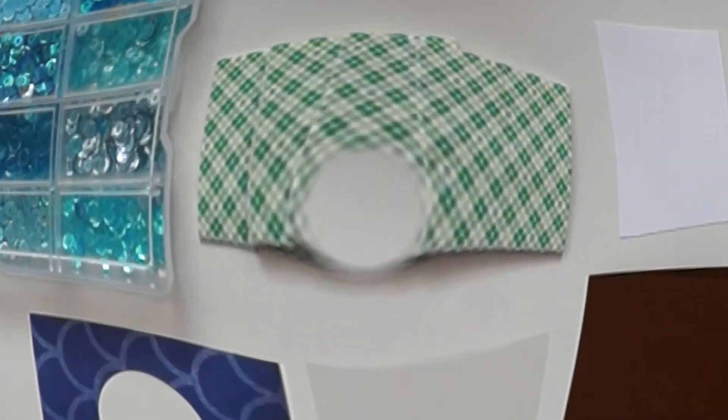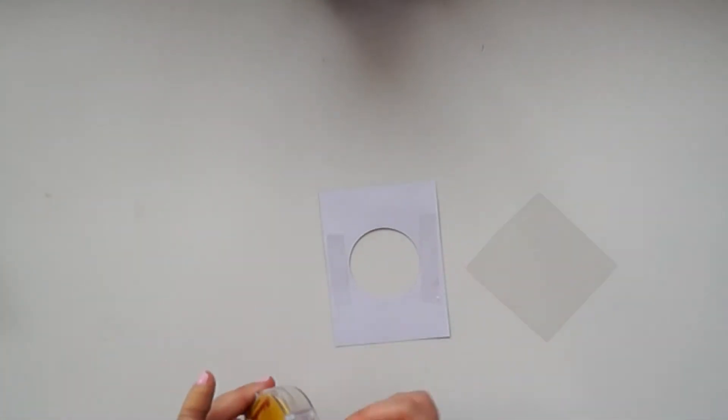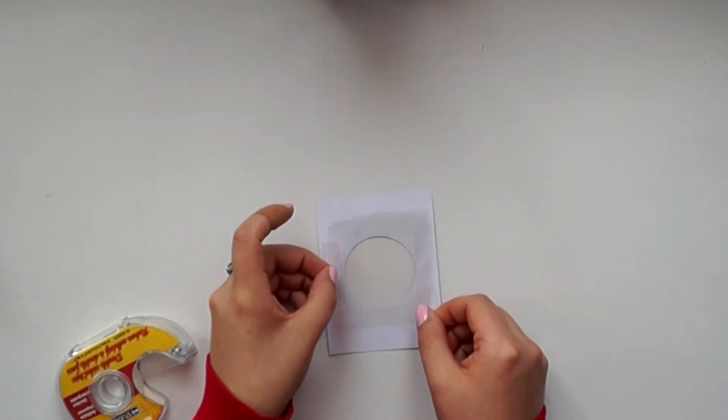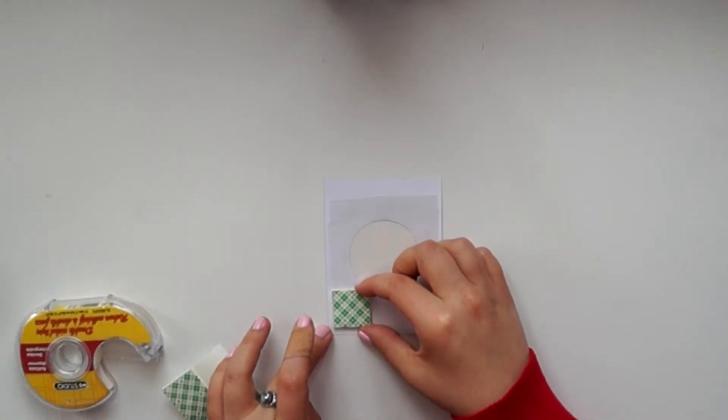Alright, so let's get started. The very first thing we're going to do is put some double-sided tape on the back of our window cardstock, and then we're just going to adhere the clear acetate paper to the back.